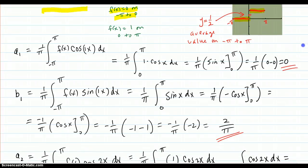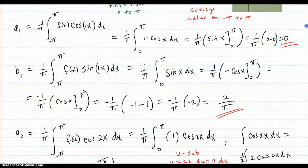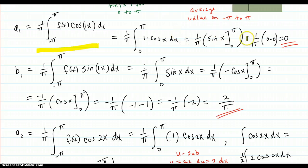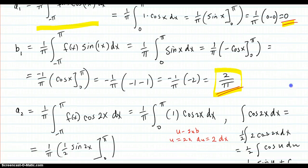Let's move on to A1. There's your formula for A1, and the same idea applies — zero to π. You work out the integral and you get zero. B1 works out to be 2 over π.